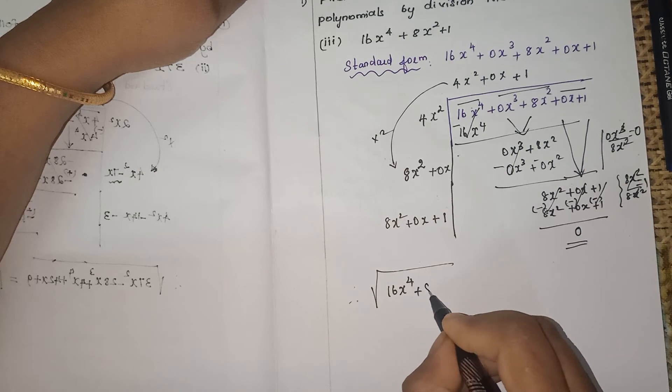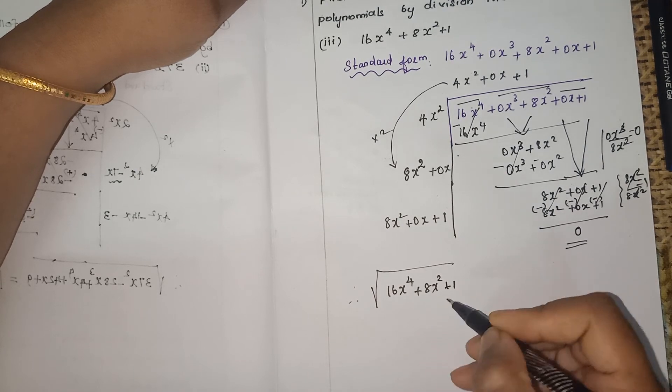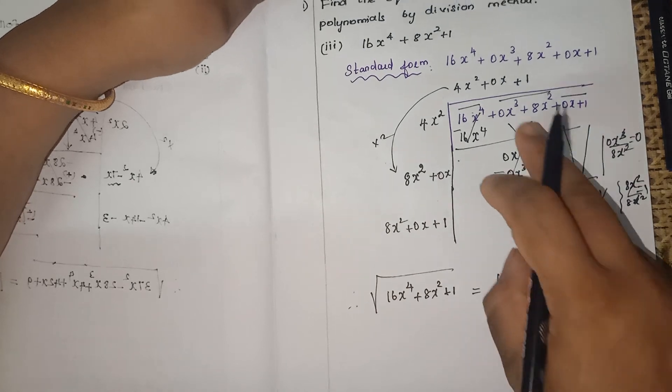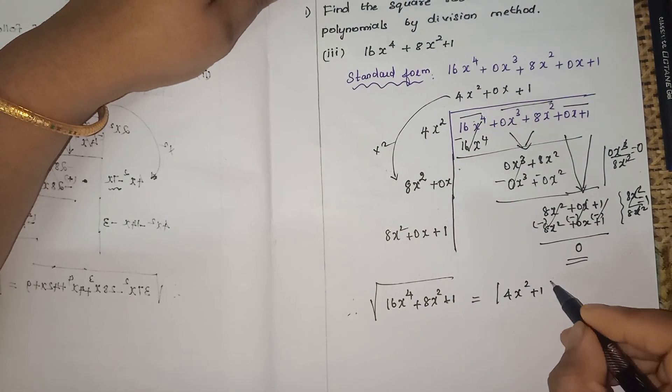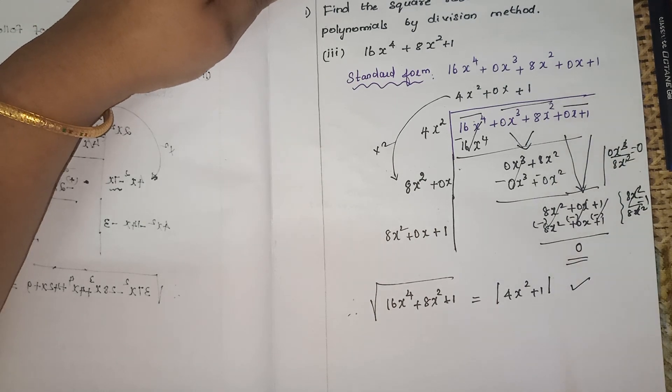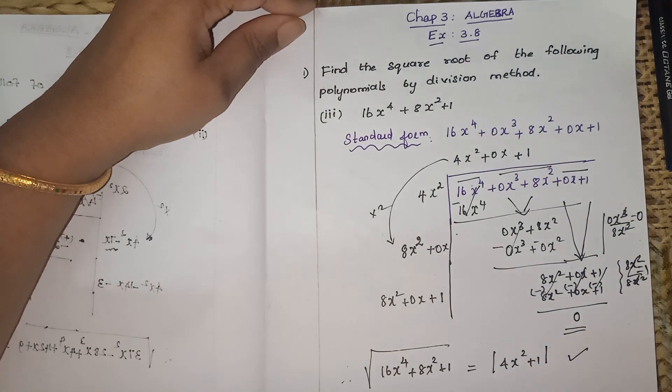Therefore, the square root of 16x to the power 4 plus 8x square plus 1 is equal to 4x square plus 1. This is the final answer. Thank you, children. Please subscribe to my channel. I'll see you next time.